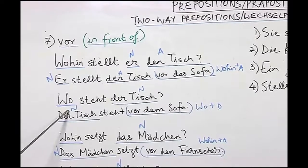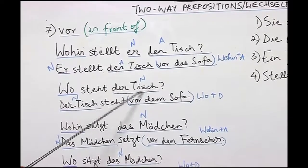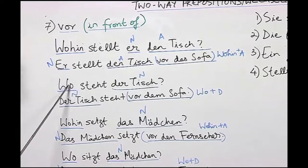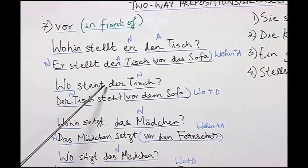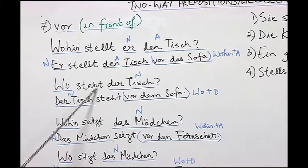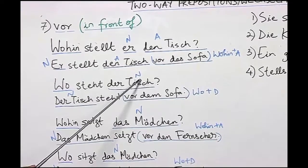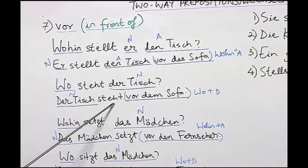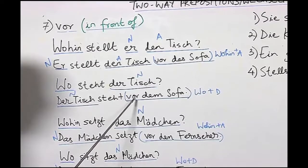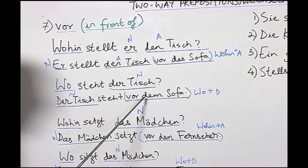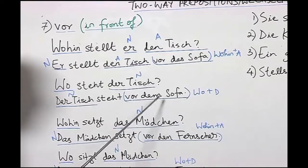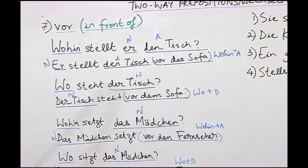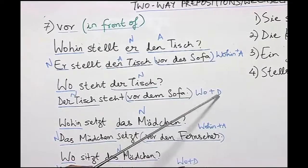Now let us look at this question: Wo steht der Tisch? Der Tisch steht vor dem Sofa. With 'wo' we form a dative answer. The verb 'stellen' is here a dative verb, the only nominative is 'der Tisch', and the answer begins with der Tisch, then the conjugated verb 'steht', then 'vor' as a dative preposition. Therefore we have 'dem Sofa', which is the dative form of 'das Sofa', and with this we get the answer to the wo question in dative.